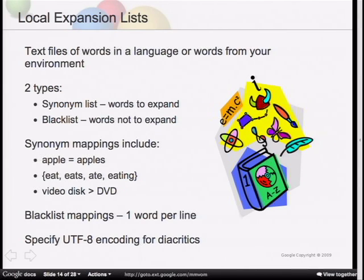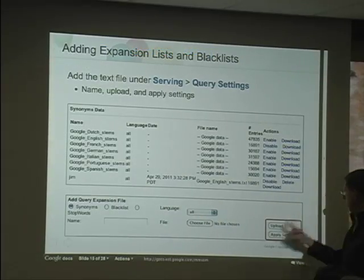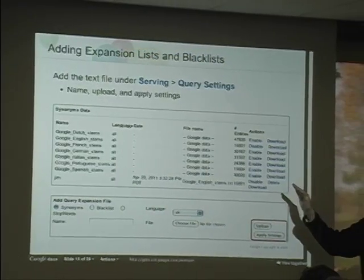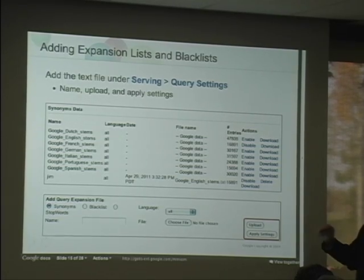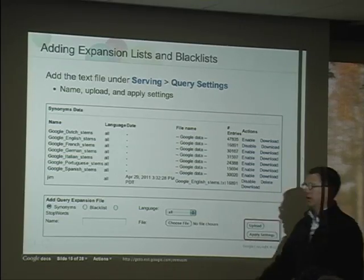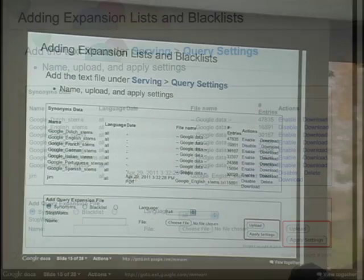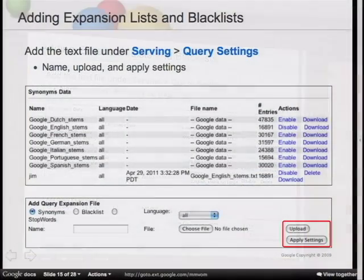It's important to specify UTF-8 encoding for your diacritics to work. When you go to upload a file, select it, give it a name which will show up in the list, and click Upload. It will upload the file and check it for syntax. Then apply the settings. Remember: you have to click Upload and then Apply Settings to bring it into the list, and you may have to select Enable to make it active.